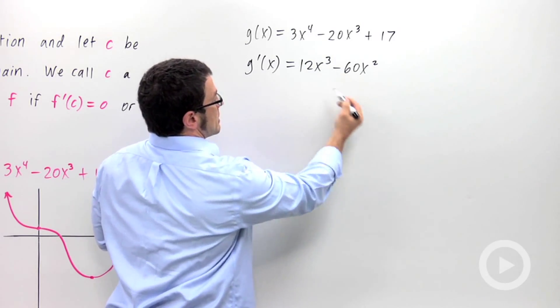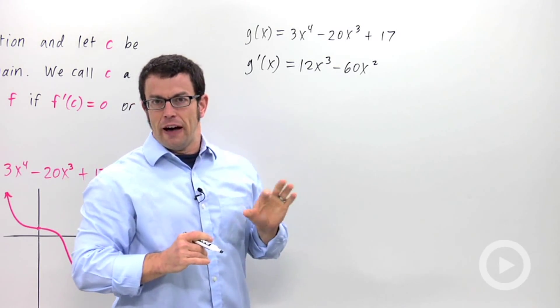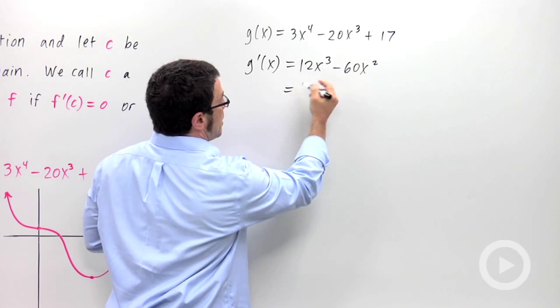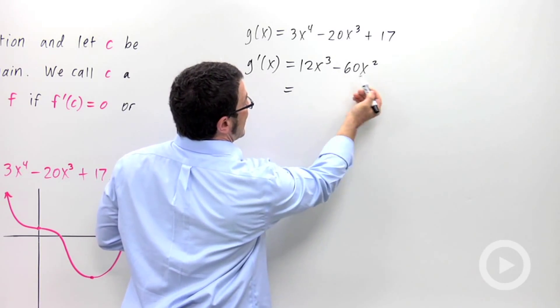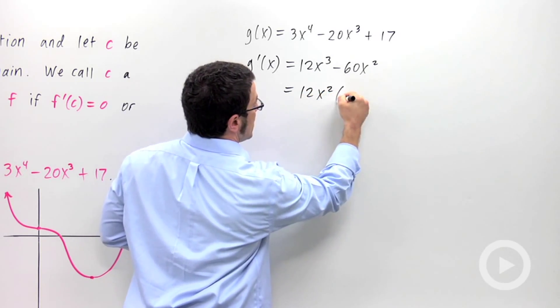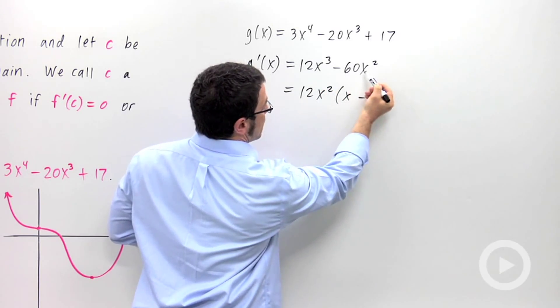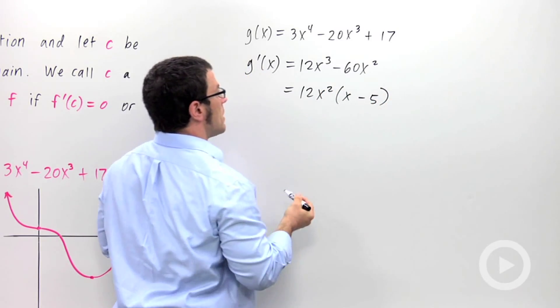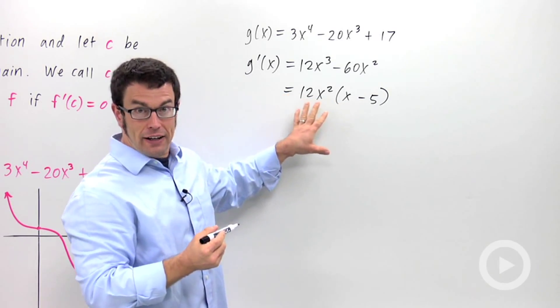Let me factor this. It'll always be easier to find critical points if I factor the derivative. And so I'm going to pull out the common factor of 12 and x squared, 12x squared. And that leaves an x and a 5. And so this is my derivative factored.